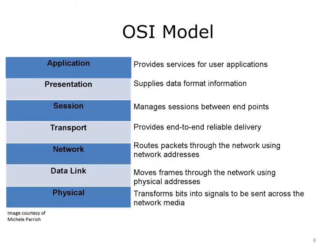The application layer is the OSI layer closest to the end user. The user interacts with the application, which uses services provided at the application layer. For example, a user uses Internet Explorer, IE, to surf the web. Hypertext Transfer Protocol, HTTP, is the protocol that works at the application layer that allows IE to work.